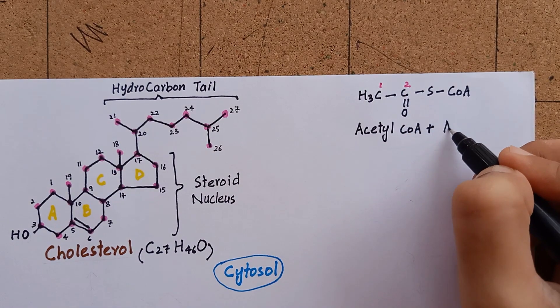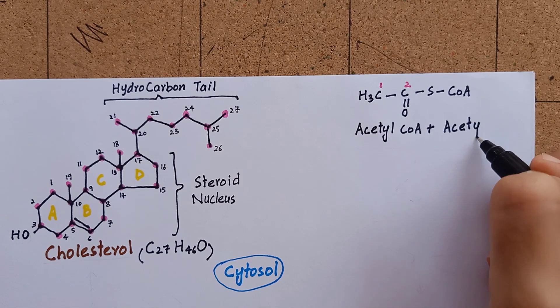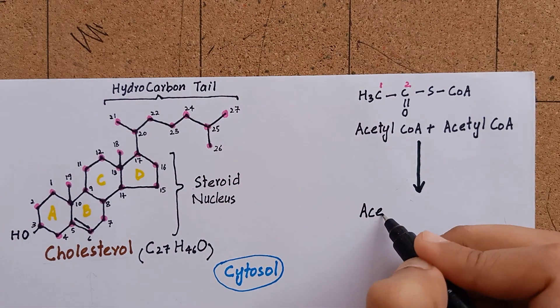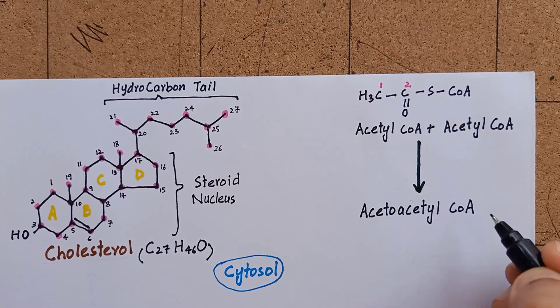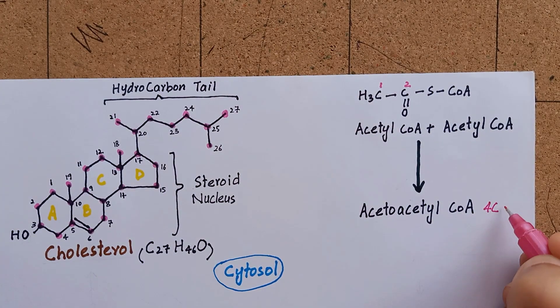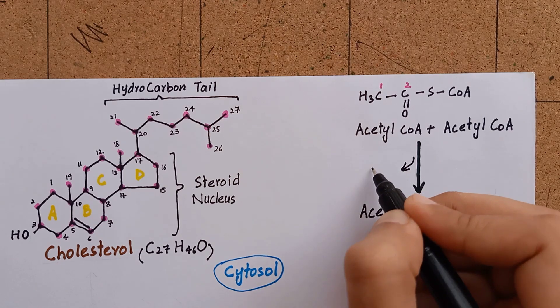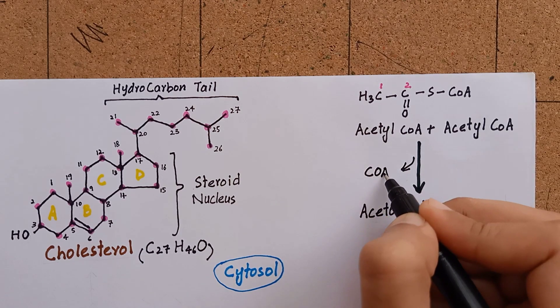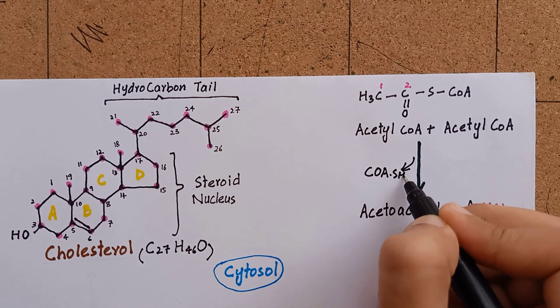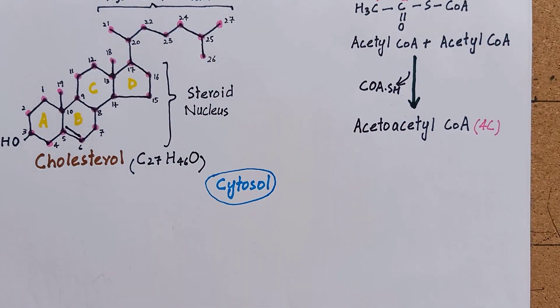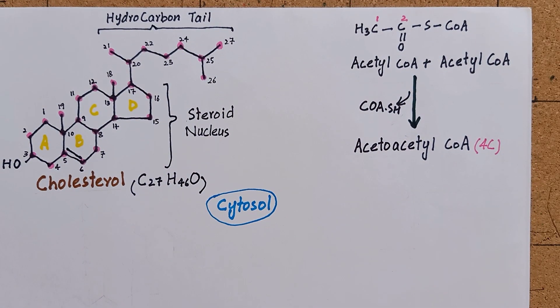The process of cholesterol synthesis starts when two molecules of acetyl-CoA combine together and form acetoacetyl-CoA, which has 4 carbon atoms. We will keep counting carbon atoms in every step. In the final structure of cholesterol, we don't need any CoA or Coenzyme A. So, one of the Coenzyme A will leave from here, while one of them will remain attached to the 4-carbon acetoacetyl-CoA molecule.